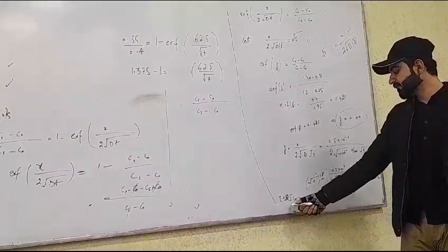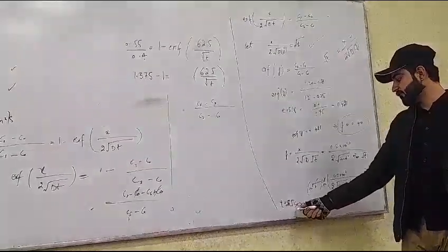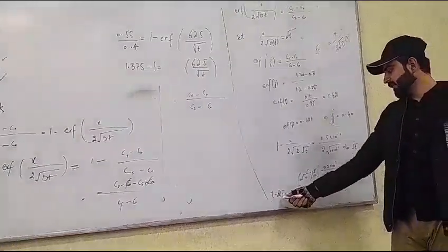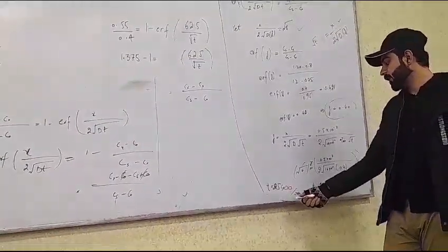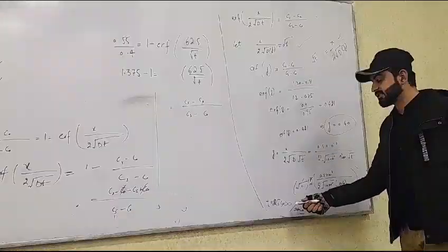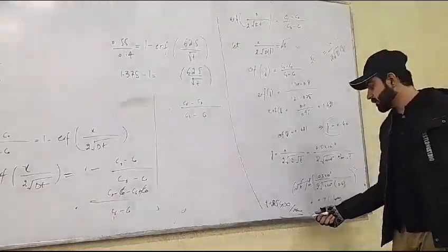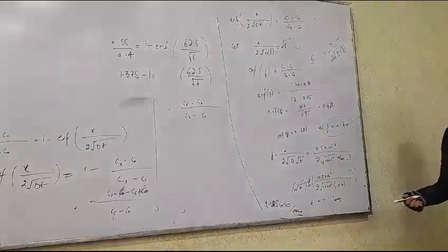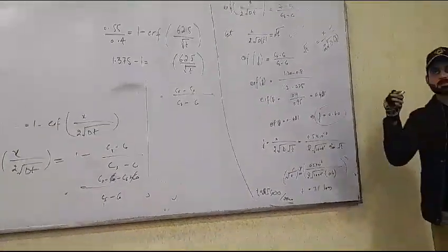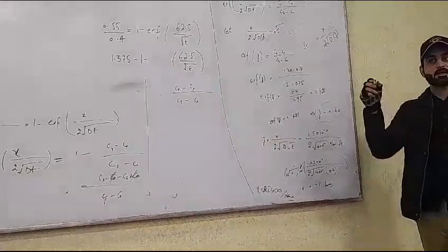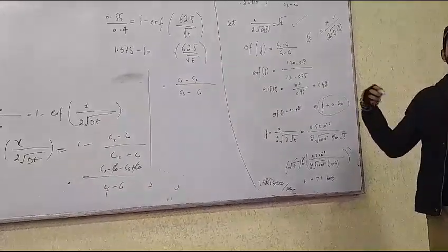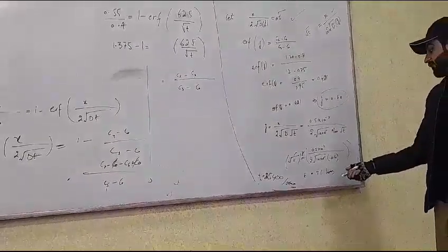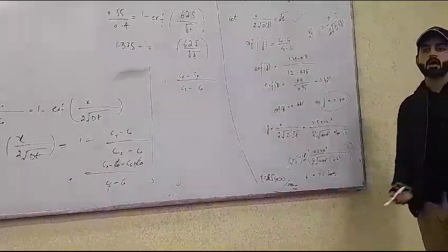The value of t comes out to 25,400 seconds. Dividing by 3600 converts this to hours, giving a final answer of approximately 7.1 hours.